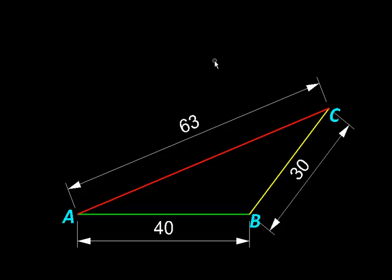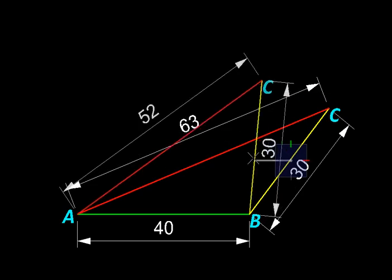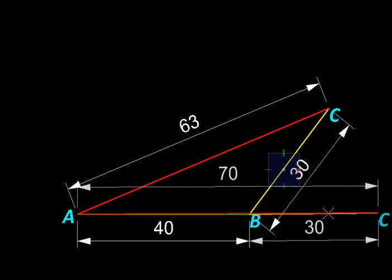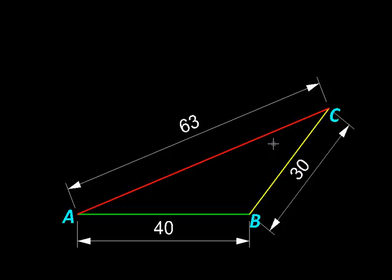But vectors do not get added in the same manner. Take the example of a simple vector quantity like displacement. Suppose we walk 40 steps from point A to point B, and then we walk 30 steps in this direction to reach point C. Then our net displacement need not be 40 plus 30 equal to 70, but it could be something like 63 steps in this direction. In fact, it could vary from a minimum of say 10, like this, to a maximum of 70, like this. So vectors get added in a very special way.